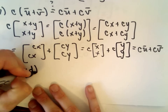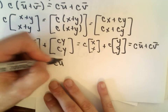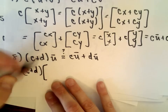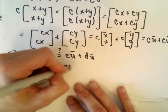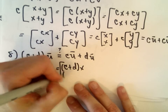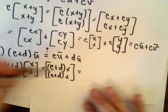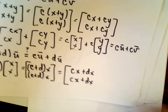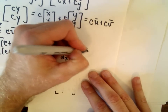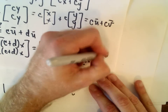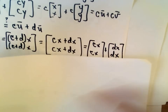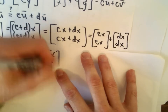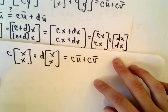Property 8: does (c + d)u equal cu + du? Taking (c + d) multiplied by (x, x), distributing gives ((c+d)x, (c+d)x) = (cx+dx, cx+dx). We can break this into (cx, cx) + (dx, dx) = c(x, x) + d(x, x) = cu + du. So that checks out as well.